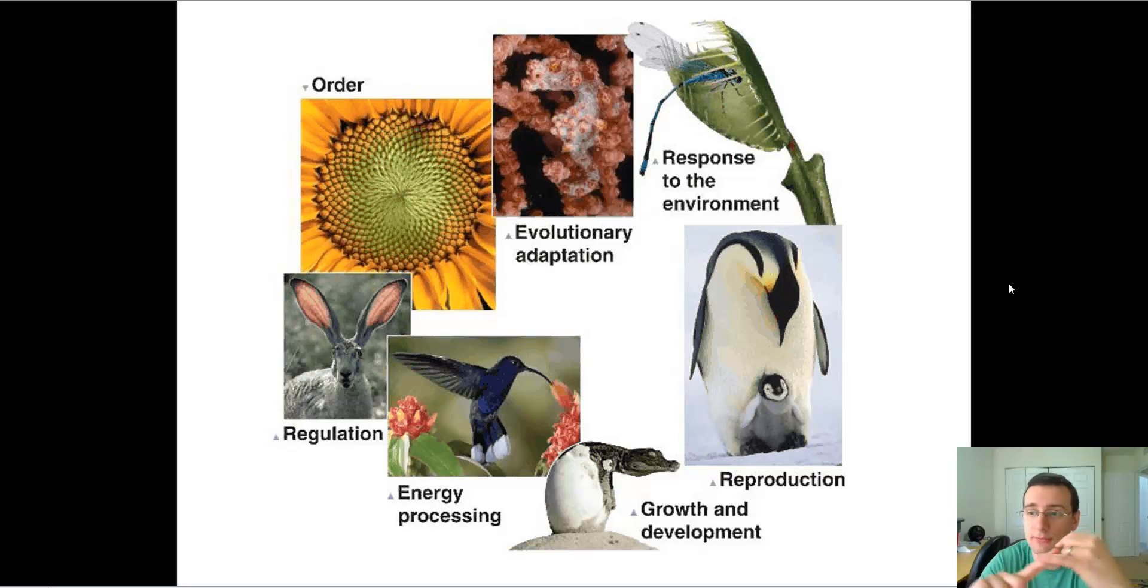Every life form responds to the environment. It has to adapt to environmental changes, therefore seek food, seek shelter. In this case, the plant is about to eat that fly. Every life form has evolutionary adaptations, and as a population, life changes over time or across generations. So life evolves.